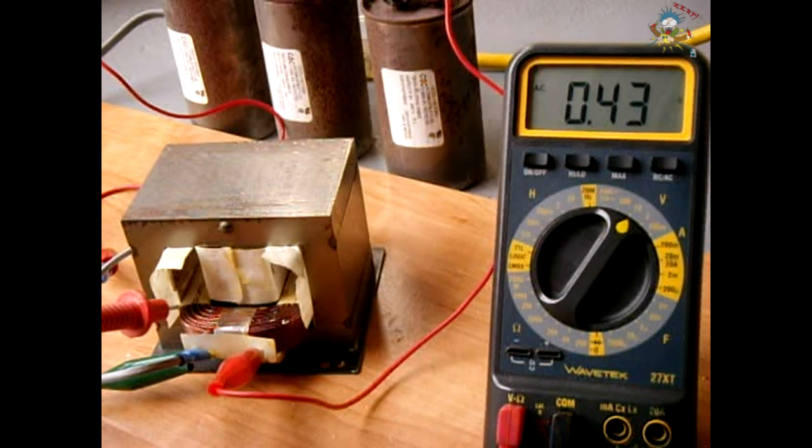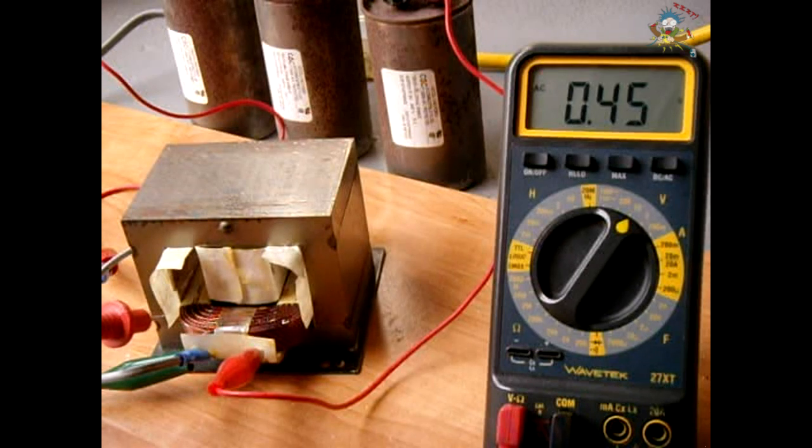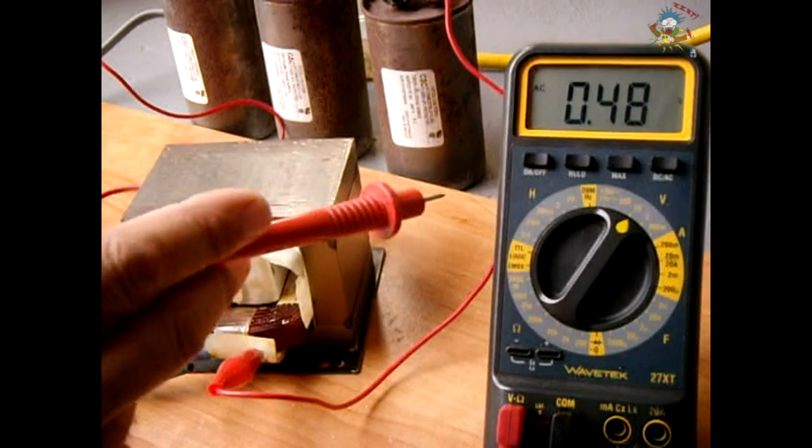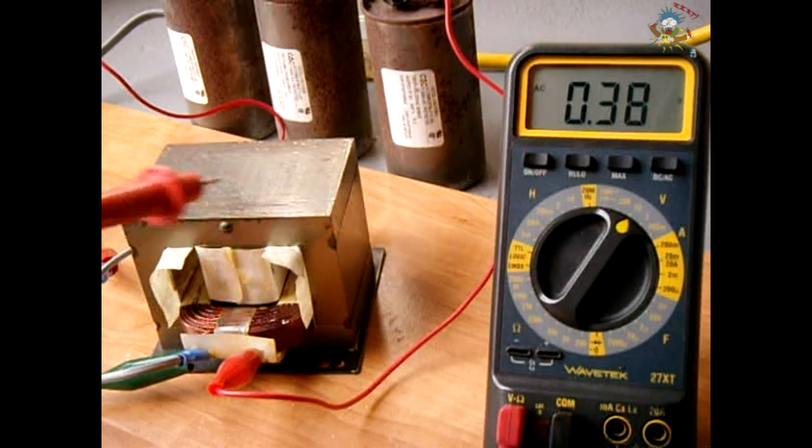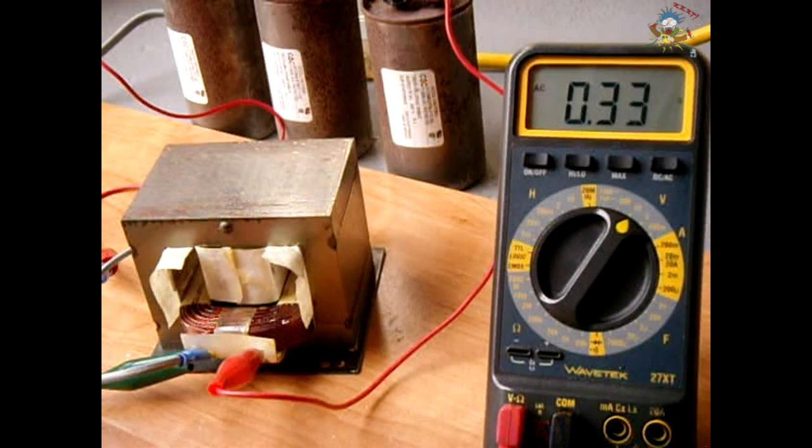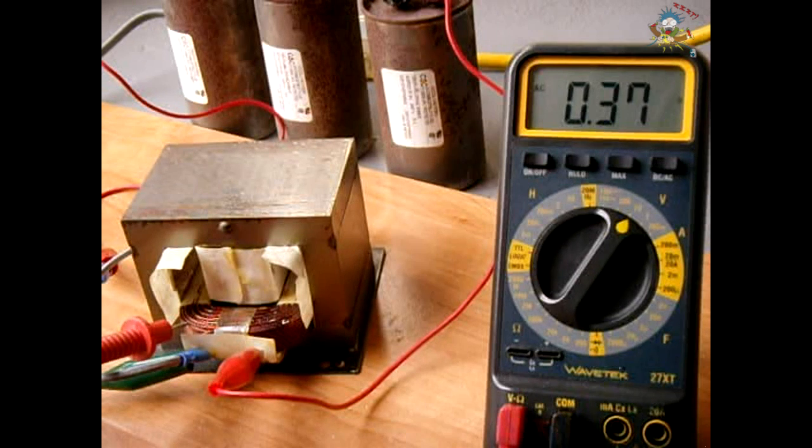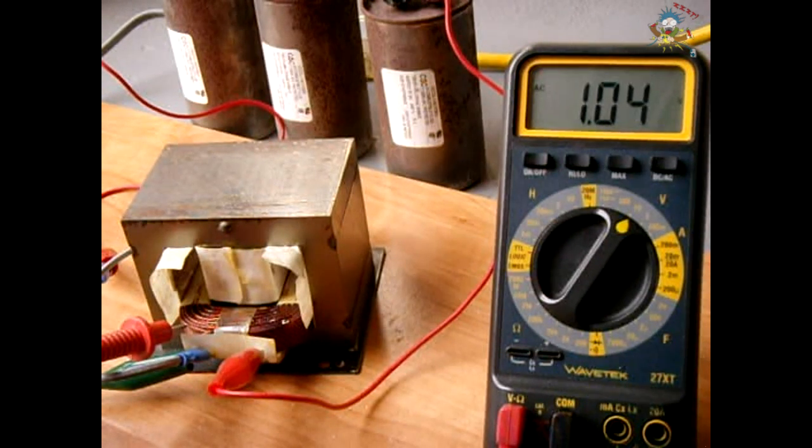As we move from the outside all the way towards the inside, the voltage is going to get higher and higher and higher until it matches the 115 to 120 that's coming out of the AC receptacle. So this right here is only like one or two turns, and that explains why you're only getting around 1.05 volts.